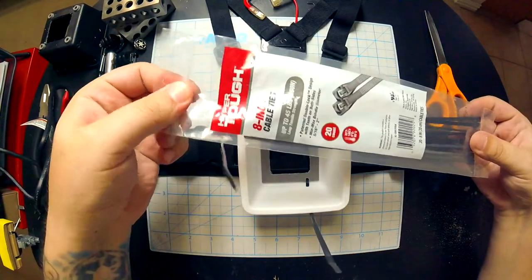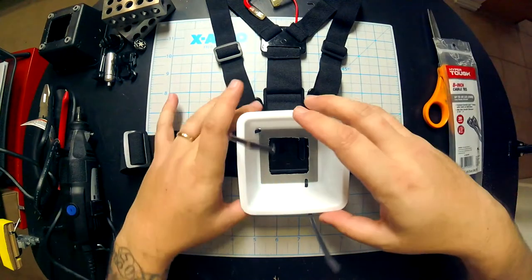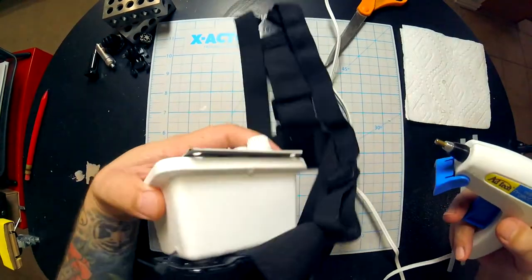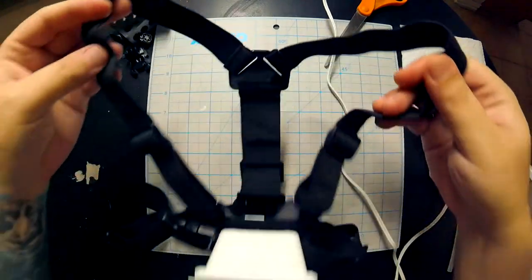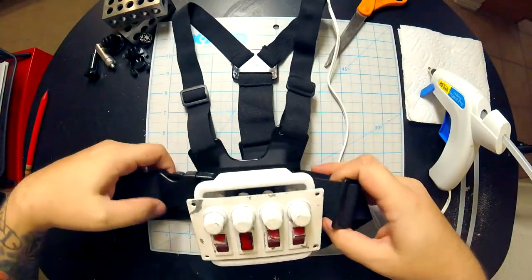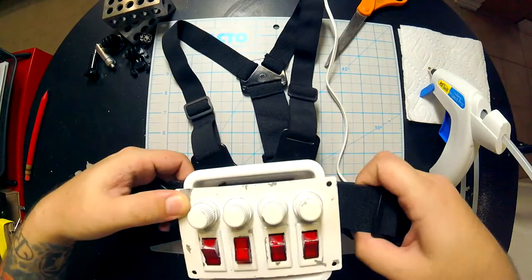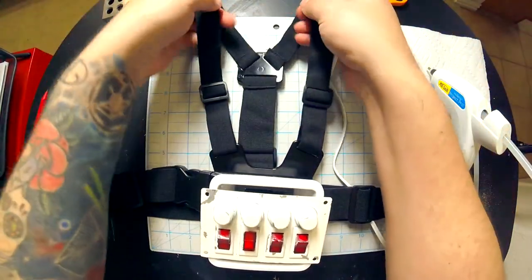So I cut into a test piece. I drilled test holes. And then when I was finally ready to make the final decisions, I cut up this white piece, drilled the correct holes, and voila! Mounted chest piece.